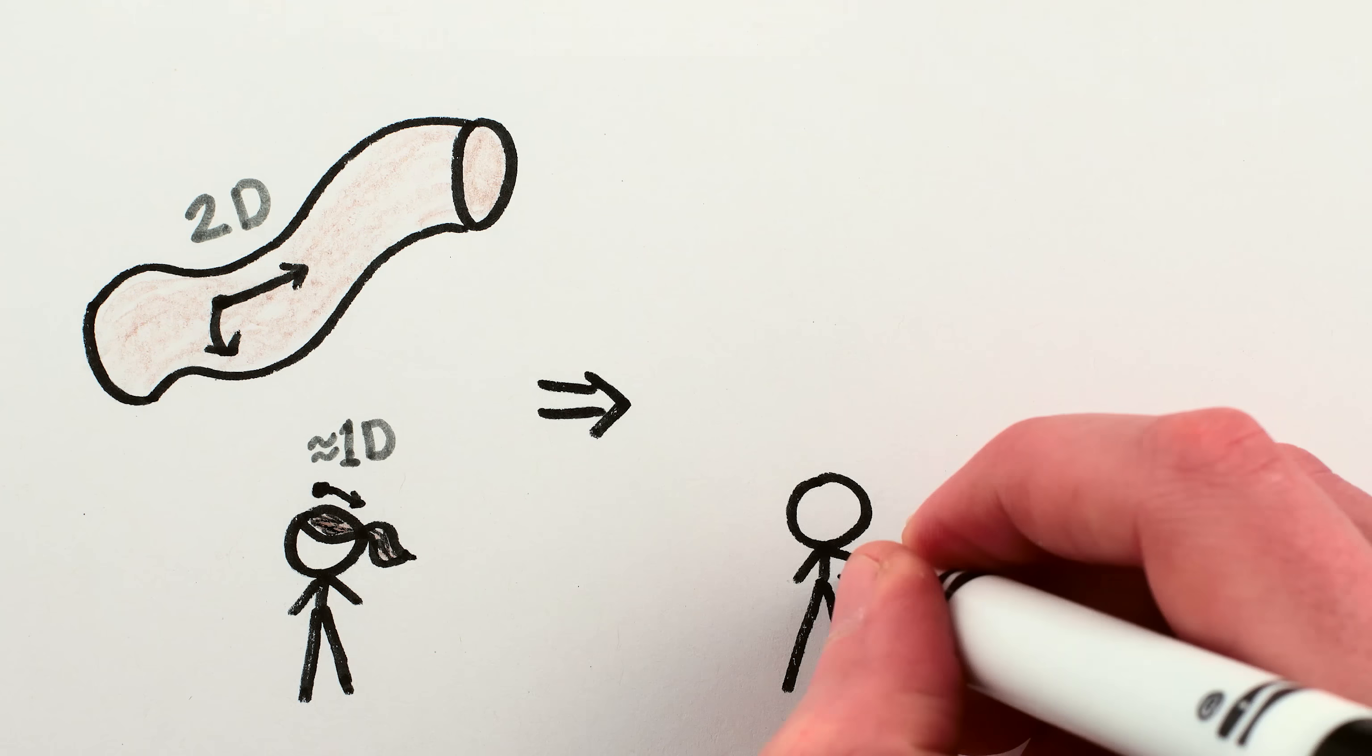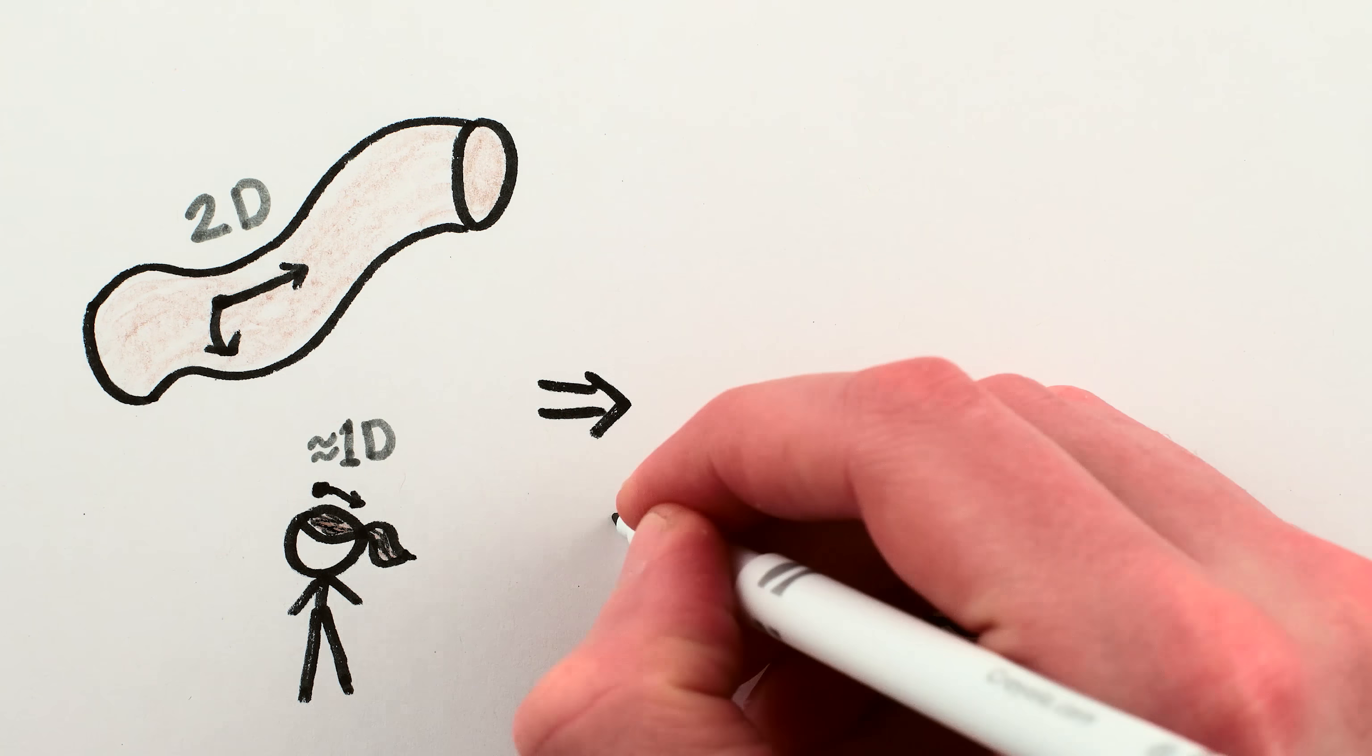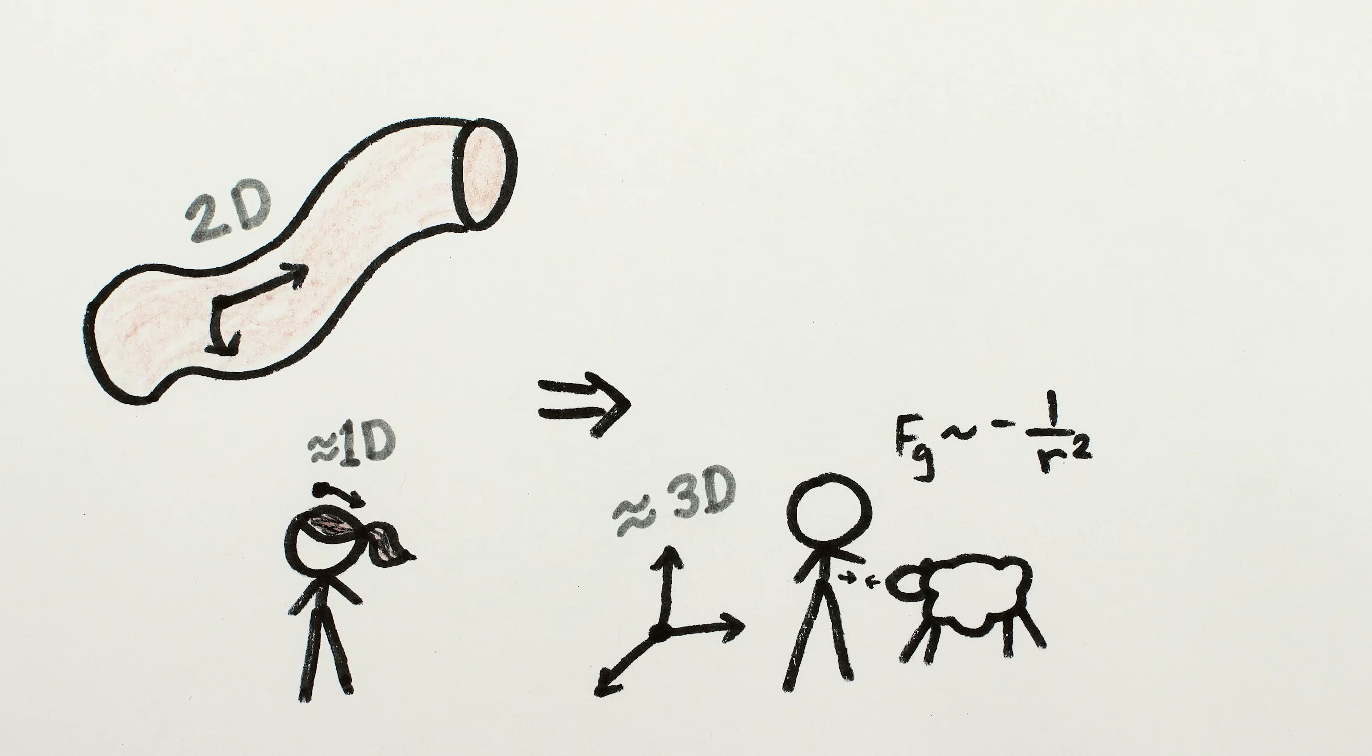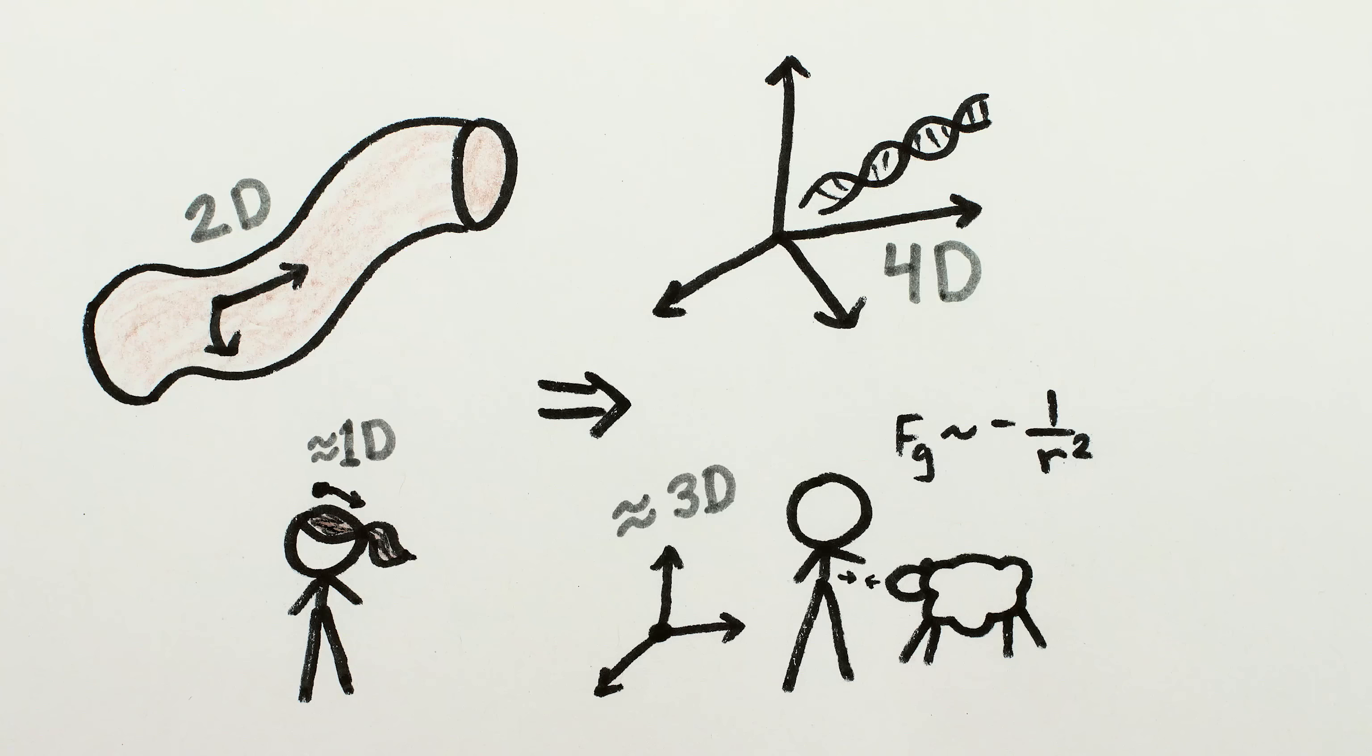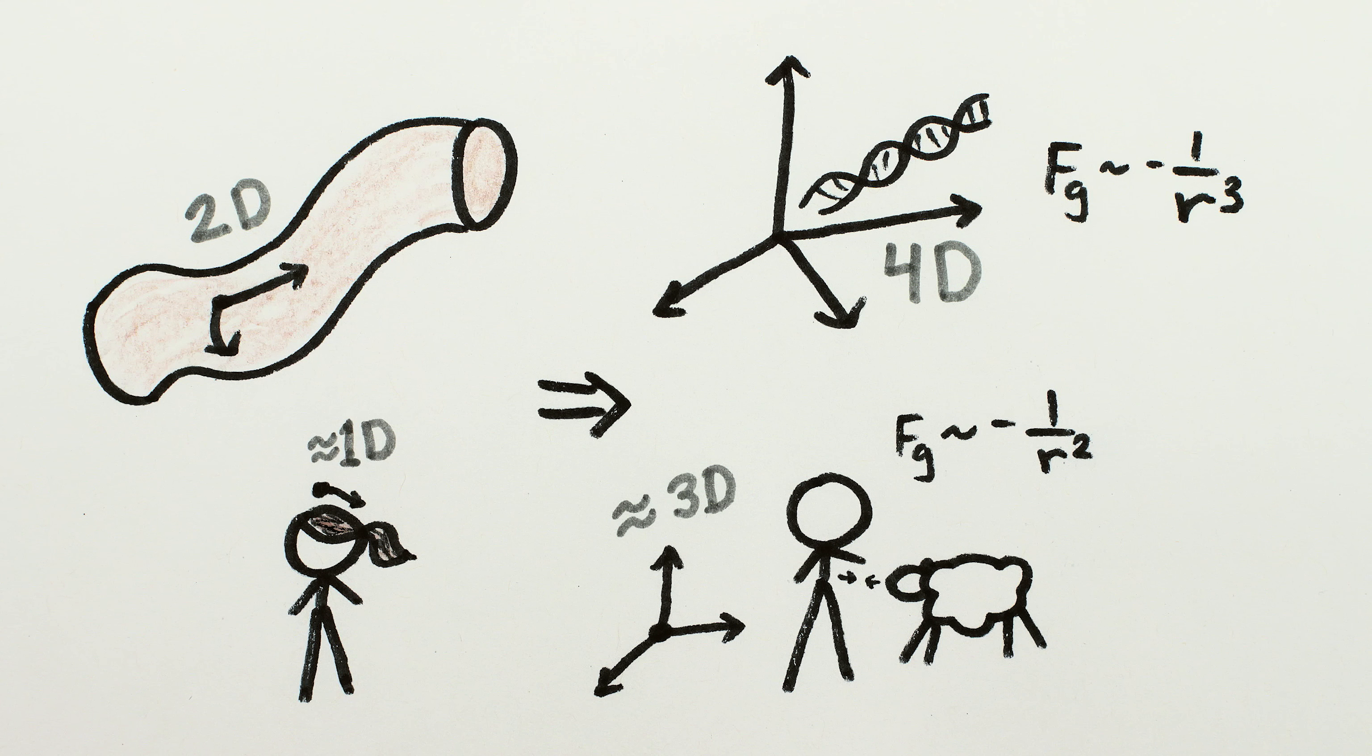This would mean that at distances much longer than a micrometer, gravity would act as if space had three dimensions and follow a roughly inverse square law, which is what Newton's Law of Gravitation is. While at distances much shorter, it would behave as if space had four dimensions and follow more of an inverse cube law, which we haven't ruled out at particularly small scales.